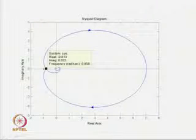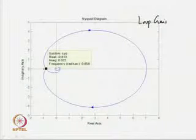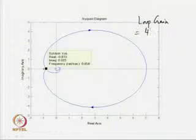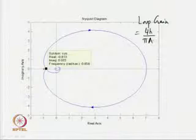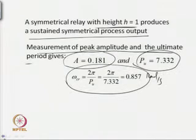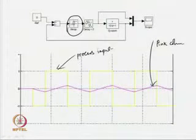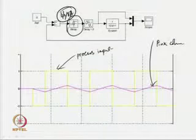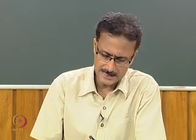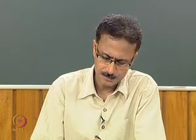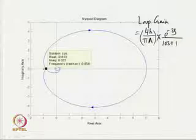Now let me go to the Nyquist diagram of the closed loop process under relay control. The loop gain uses the relay gain approximated as 4H/(πA). Keep in mind: the gain of the relay device is now 4H/(πA). We have already derived how we obtain the relay's gain using the describing function.